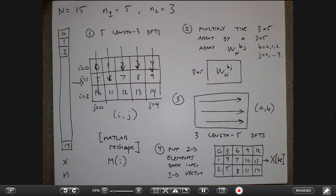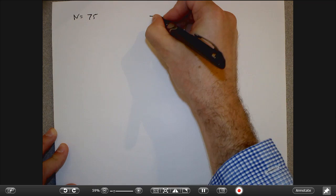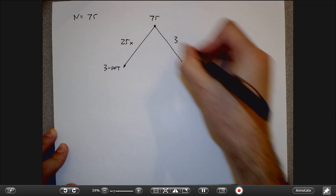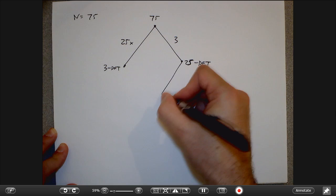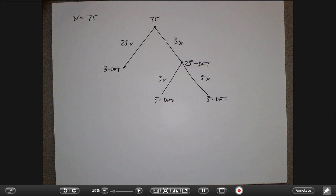This is a slick idea — you take the original signal, make a matrix, do DFTs in one direction, do DFTs in the other, then take the elements out. The process is very efficient. And in theory you don't have to stop at two dimensions. For an N=75 DFT, you could first decompose into 25 length-3 DFTs, and then each length-25 DFT can be further decomposed into length-5 DFTs. Eventually you break the DFT all the way down to its prime factors.